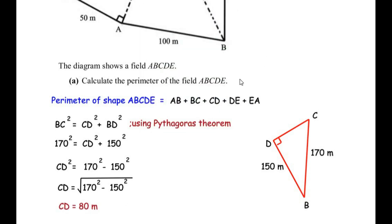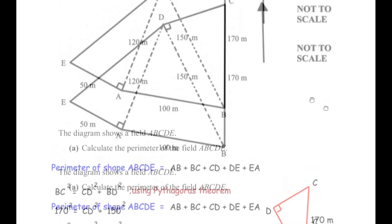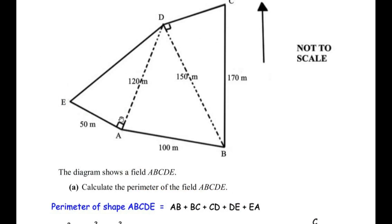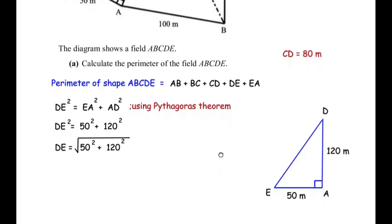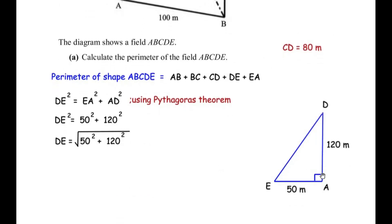Now the only length we need to find is DE. For that we are going to use right angle triangle DEA, which is right angled at A. Redrawing the triangle: DA was given as 120 and EA was 50 meters. The length DE is the hypotenuse of this right angle triangle because it is opposite the 90 degree angle.